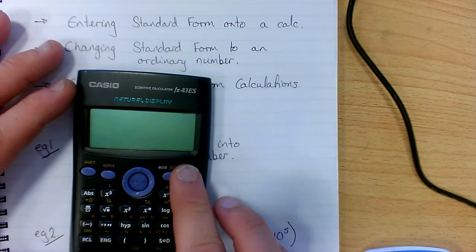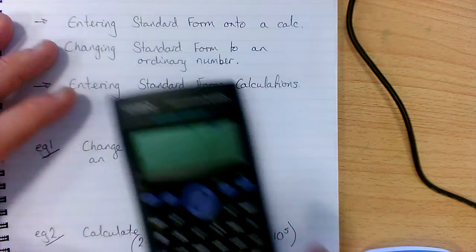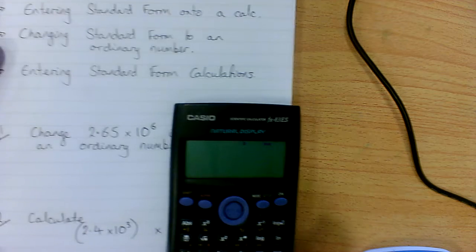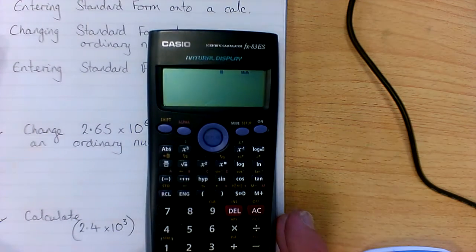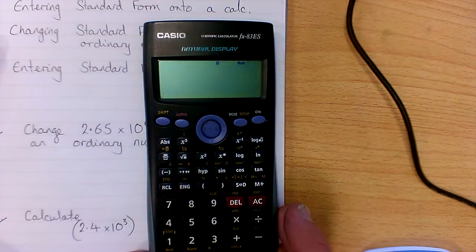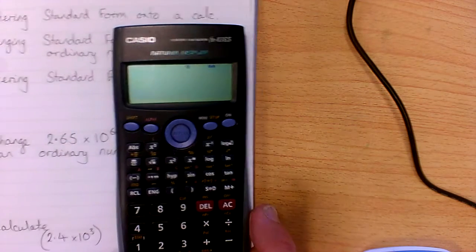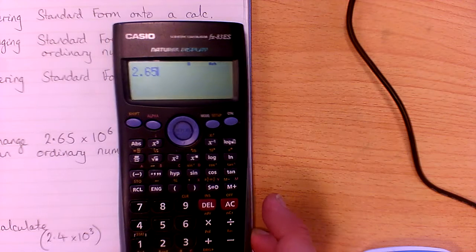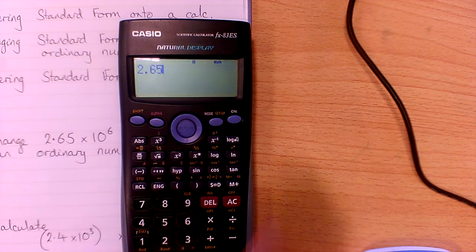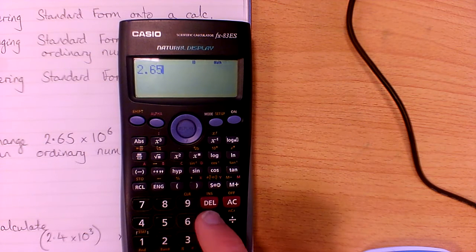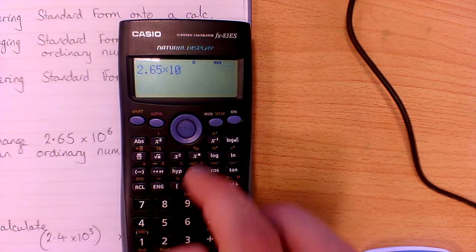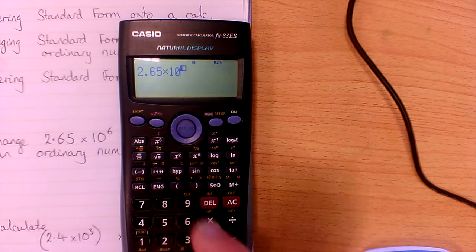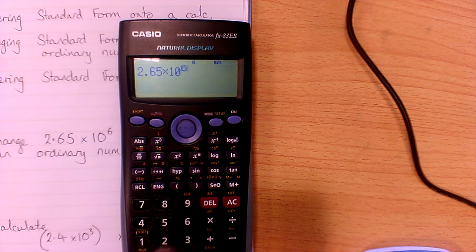We turn our calculator on and we just write it exactly as it says: 2.65. Now we can enter times 10 to the power 6. That is one way we can enter it.